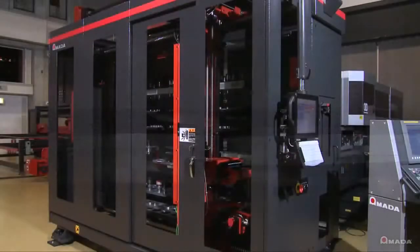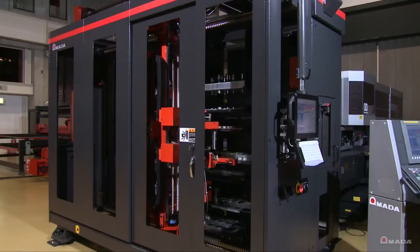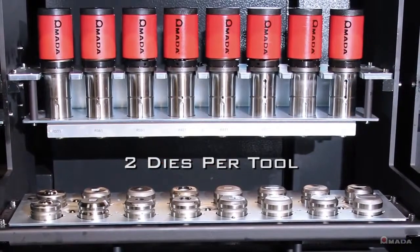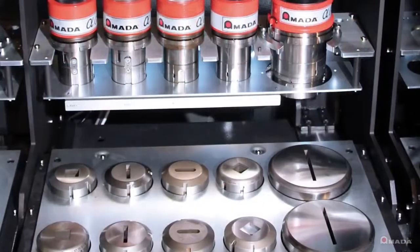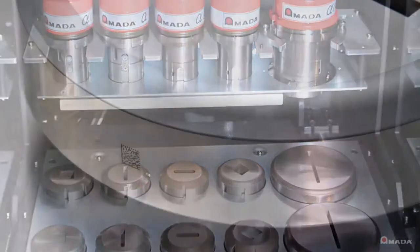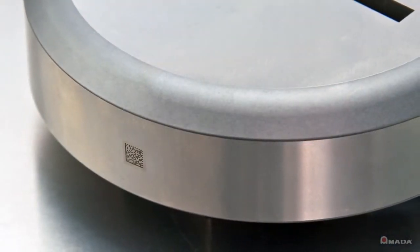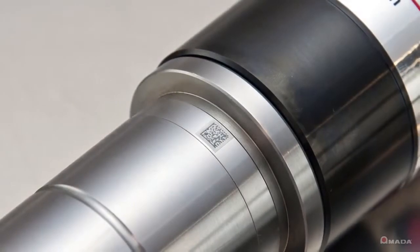The tool storage rack handles the automatic replacement of tooling and is available in 179 or 300 tool configurations. Its functions help boost your productivity by managing tooling based on their unique laser etched ID.